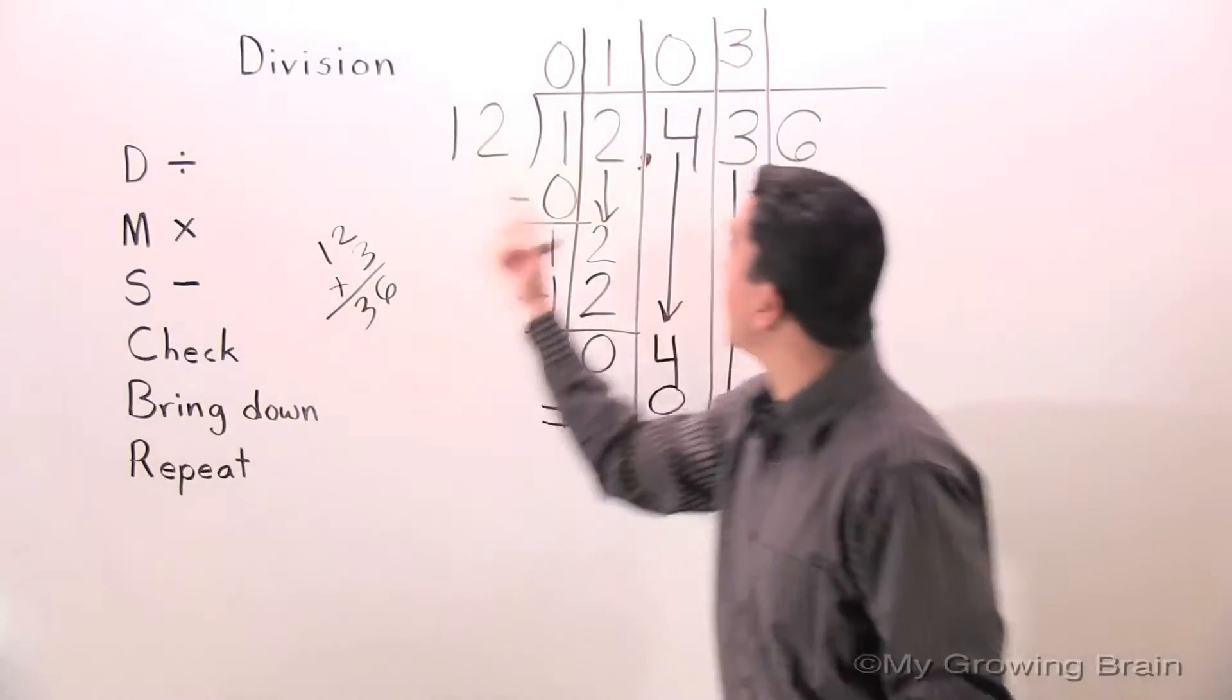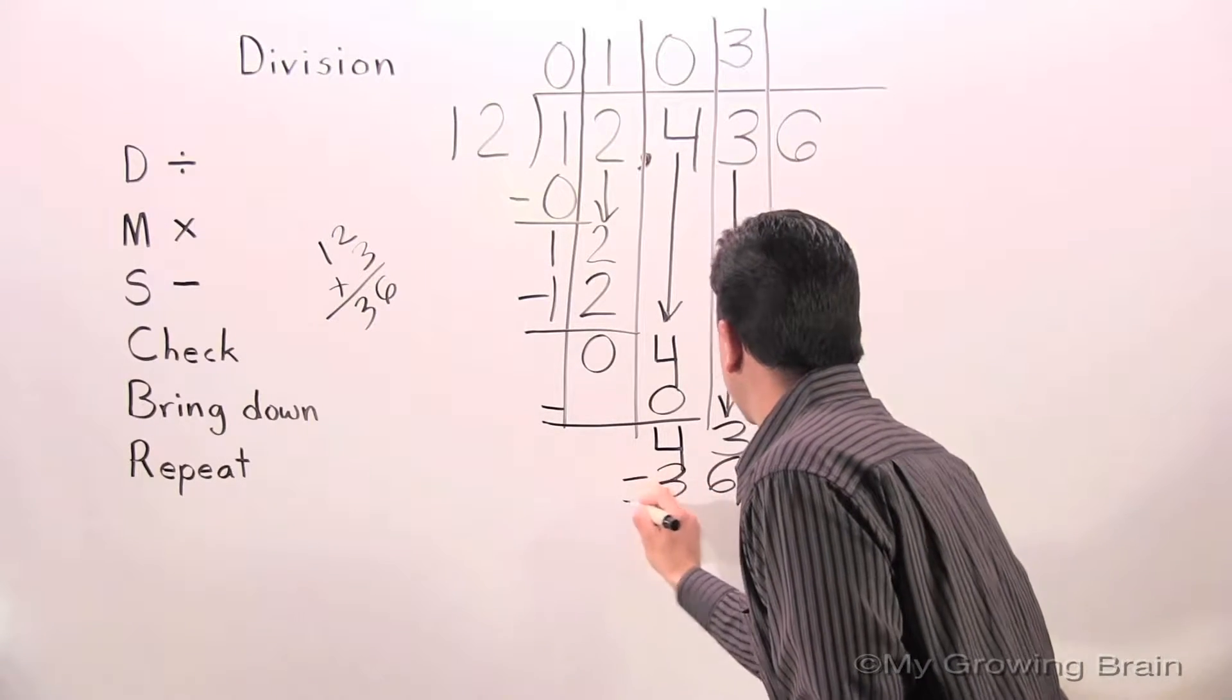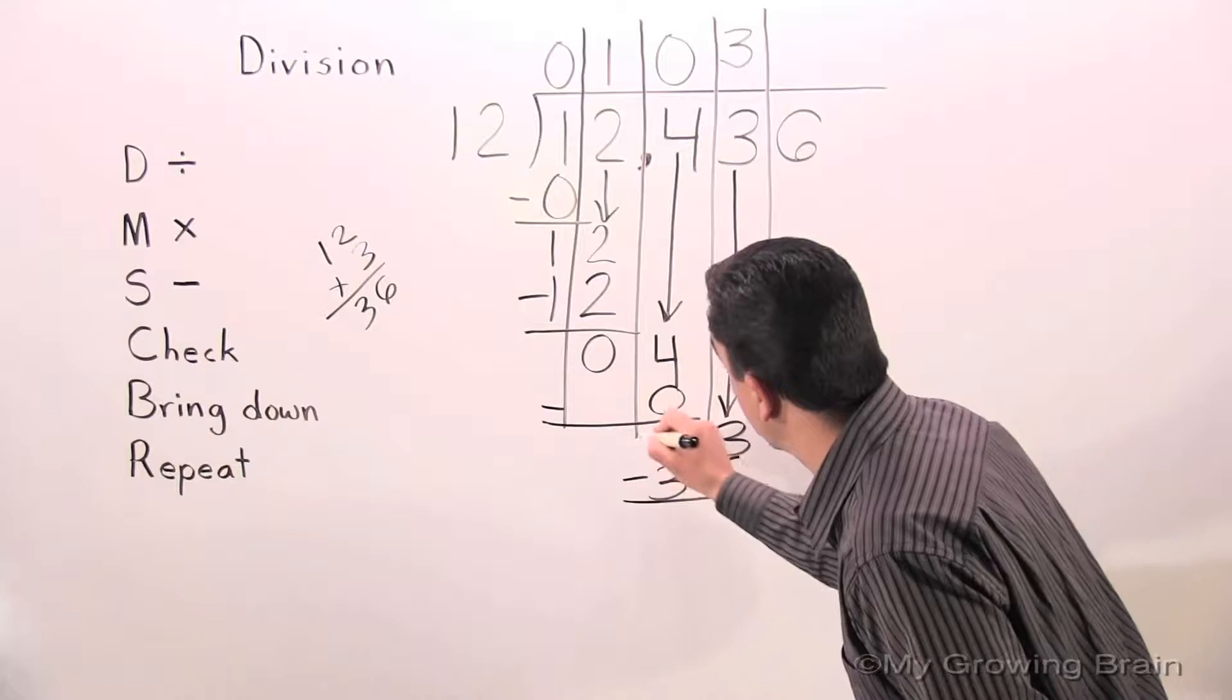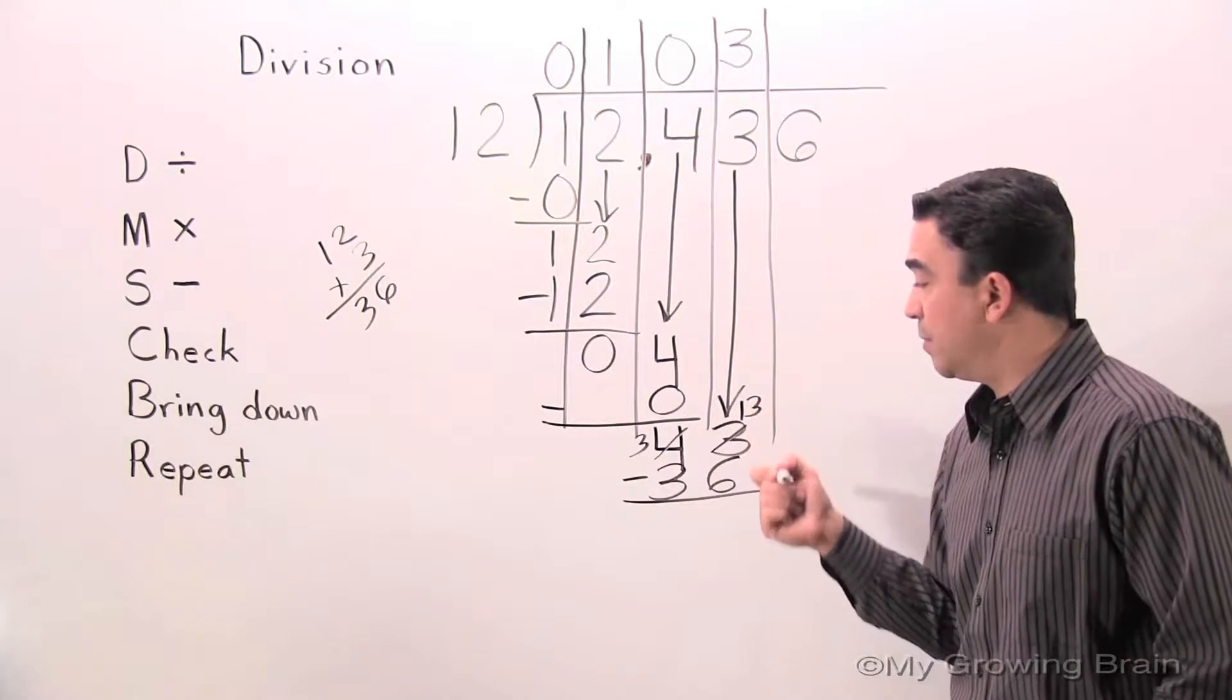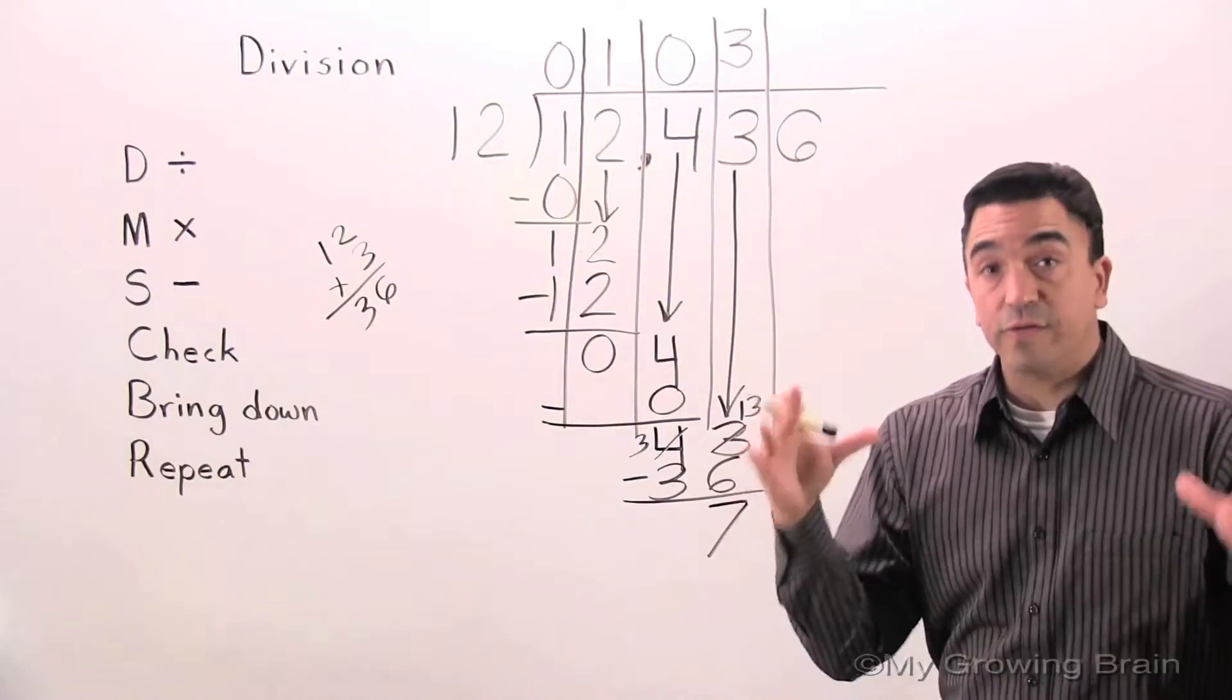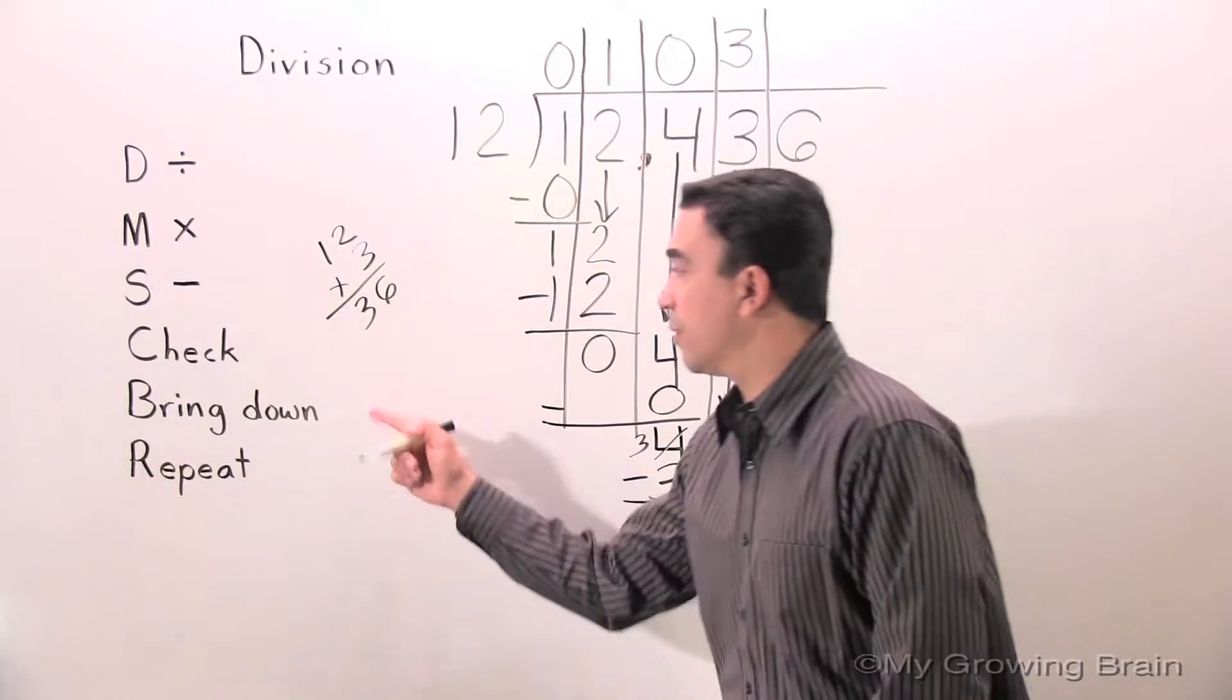Next step: multiply. 12 times 3 is 36. Next step: subtract. Okay, here we go. Regroup. 13 minus 6 is 7. Next step: check. 7 is less than 12. Keep on going. Bring down.